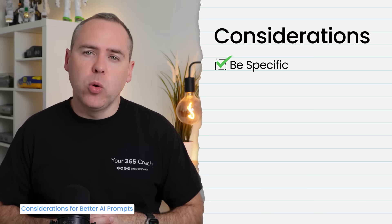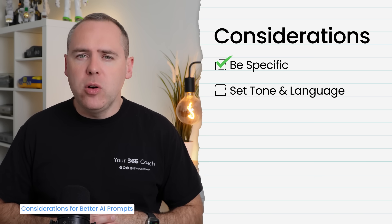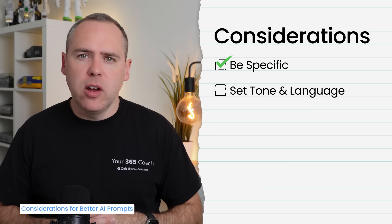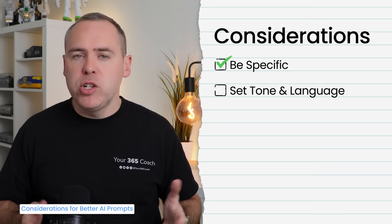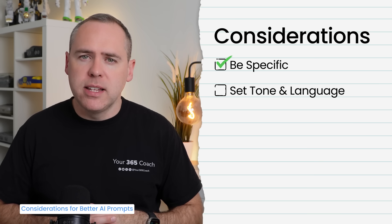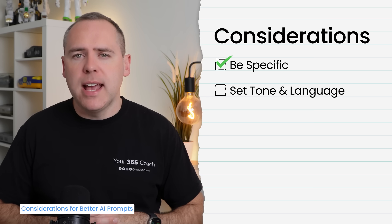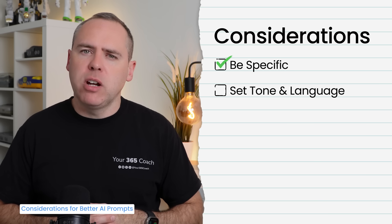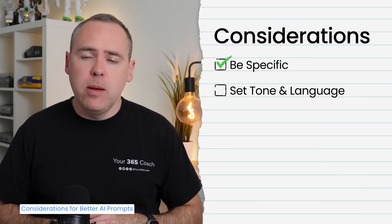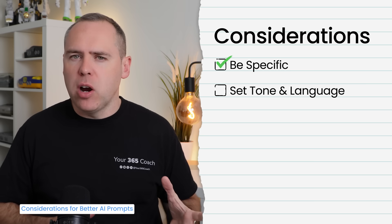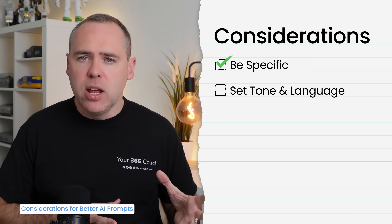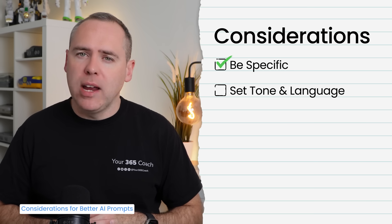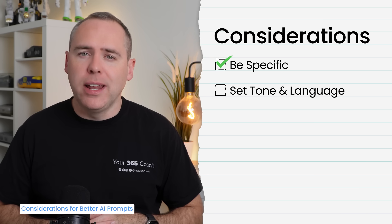Don't forget to tell Copilot or your AI tool the tone and language to respond in. AI tools like Copilot are often fairly neutral in their tone — if you want to draft a professional email, tell Copilot exactly that. If you need it in a particular language, ask it to do that as well. What I'll do with multiple languages is ask it to generate the content in two languages — one in English and one in French — allowing me to ensure the tone used in the English version translates well to the French version. So ensure you tell your Copilot or AI tool to set the tone and appropriate language.